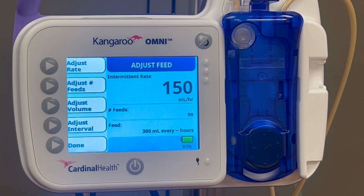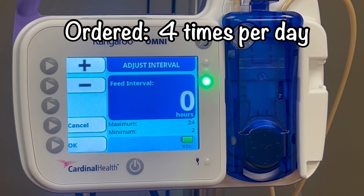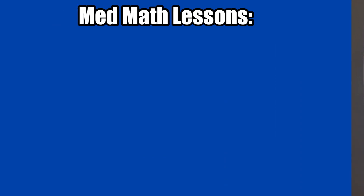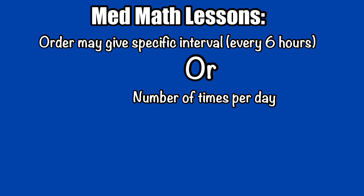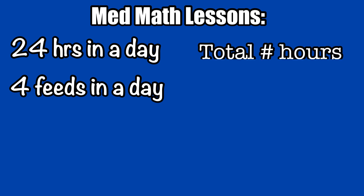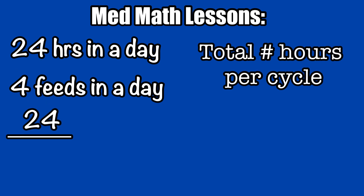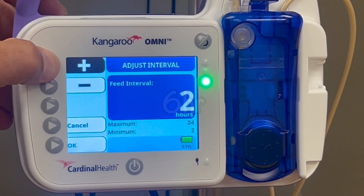When you change the number of feeds to anything other than 1, you get a new programming option: Adjust Interval. Choose that option. We know that our patient is supposed to receive this bolus 4 times per day. That doesn't give us a specific interval, so we'll need some math — though it is possible your order may clearly specify the intervals in hours. There are 24 hours in a day, and over those 24 hours we want to evenly space 4 feedings. Take the total number of hours in a day — 24 — and divide by the total number of boluses in a day — 4 — to give you the hours between boluses: in this case, 6 hours. Input that into the pump.